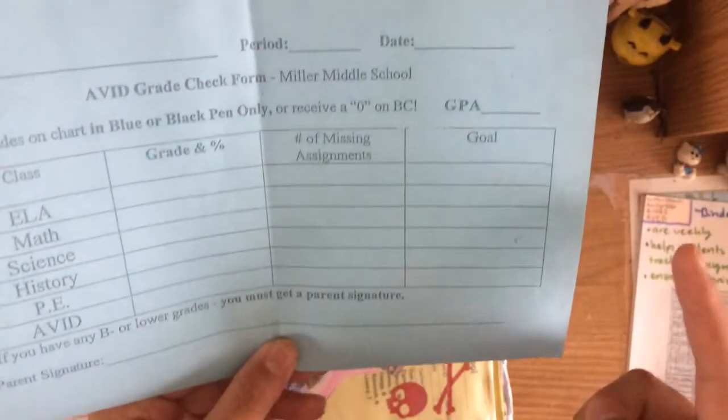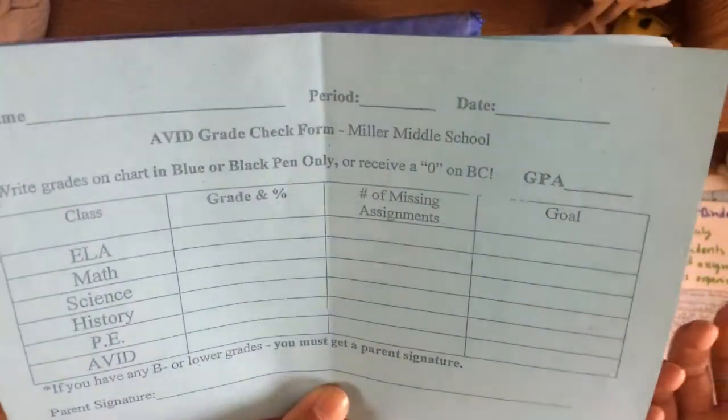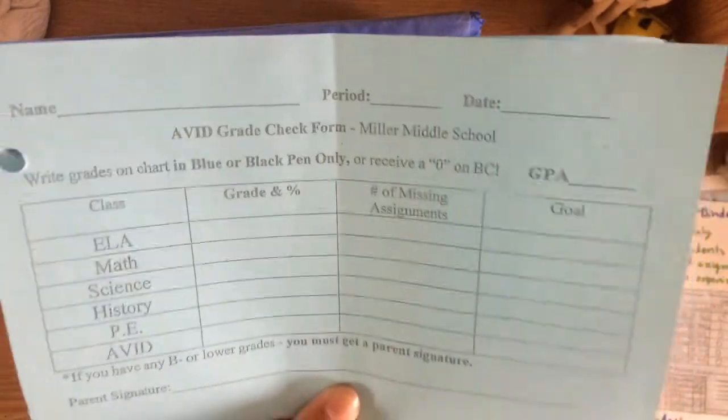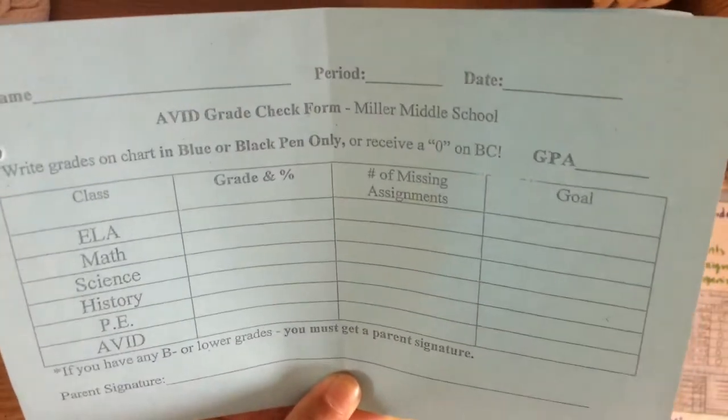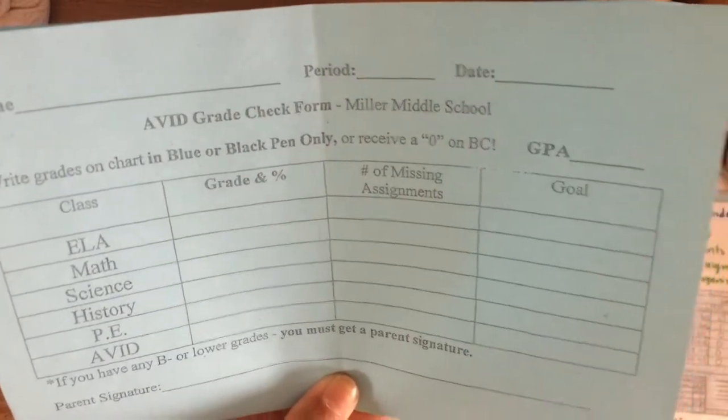After you write down all of that, you would calculate your GPA. Doing this helps students and parents monitor the student's grades. If the student does happen to get a B minus or lower in any of their classes, they must get a parent signature.